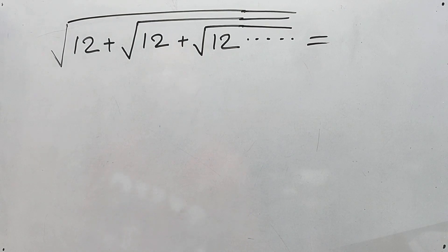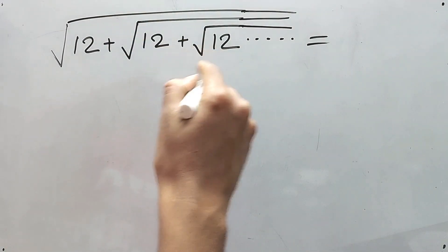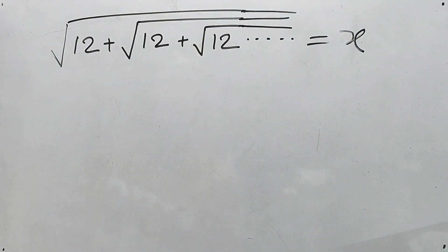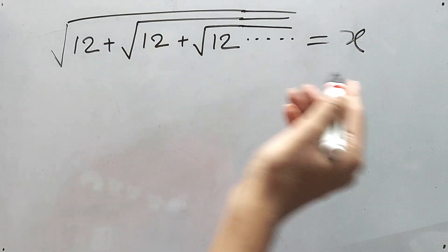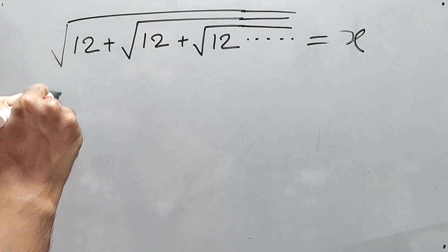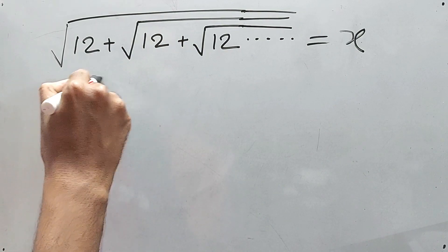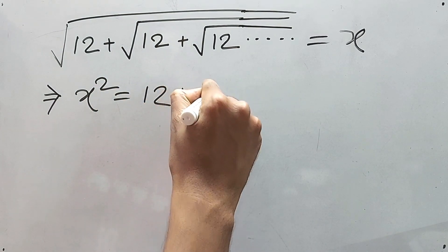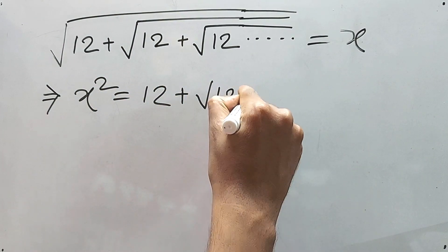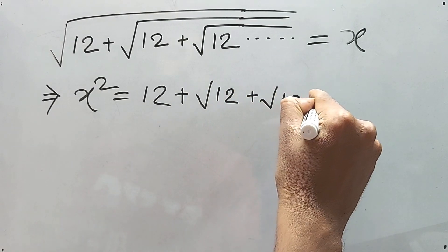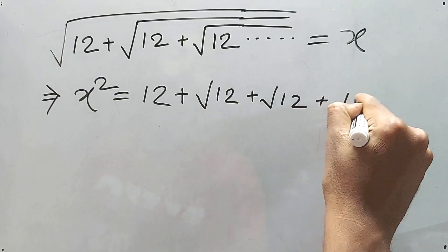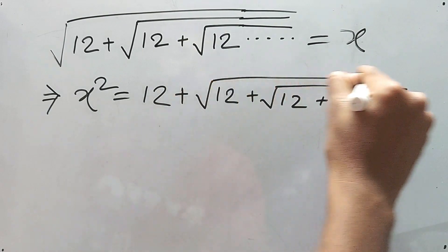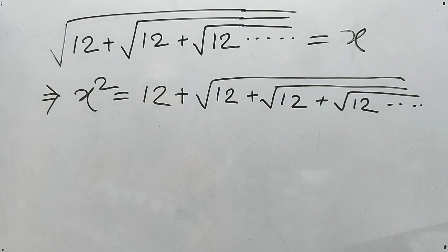Well, it's simple. Just assume that this one is equal to x. Now if we take a square for both sides, we'll get x² equals 12 plus square root of 12 plus square root of 12 plus square root of 12 dot dot dot, right?